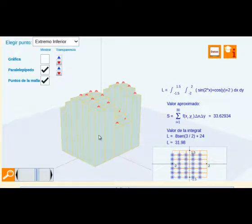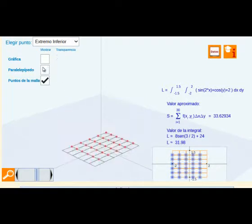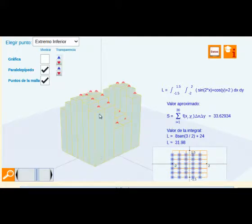El volumen de cada uno de los paralelepípedos que tiene por base el rectángulo considerado y por altura el valor de la función en el punto elegido. En este caso, para el primer rectángulo, el extremo inferior izquierdo.